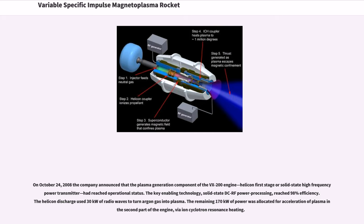On October 24, 2008, the company announced that the plasma generation component of the VX-200 engine, helicon first stage or solid state high frequency power transmitter, had reached operational status. The key enabling technology, solid state DC to RF power processing, reached 98% efficiency. The helicon discharge used 30 kW of radio waves to turn argon gas into plasma. The remaining 170 kW of power was allocated for acceleration of plasma in the second part of the engine via ion cyclotron resonance heating.